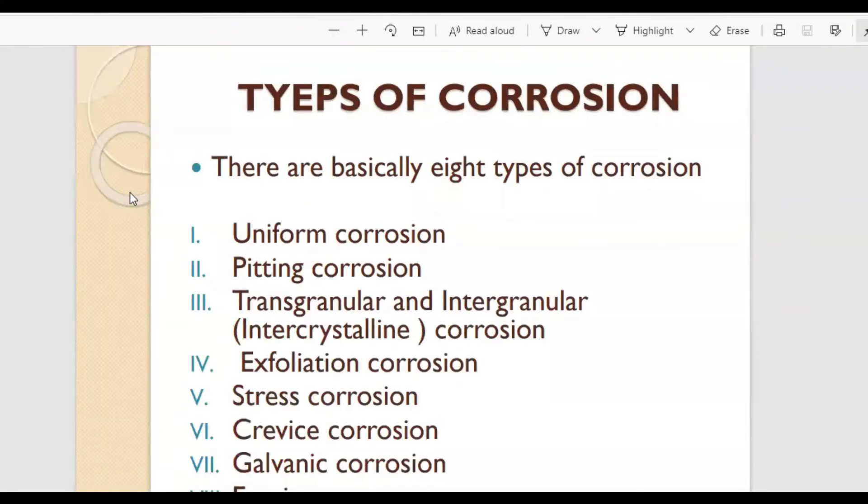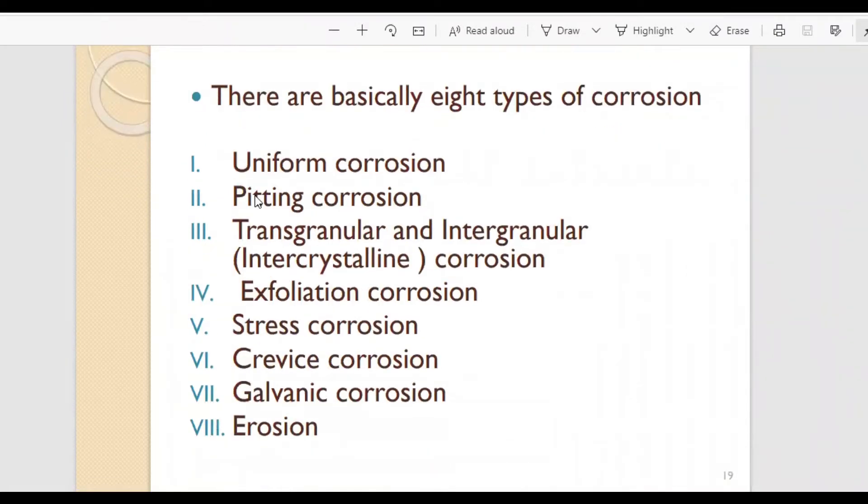We have different types of corrosion. There are basically eight types: uniform corrosion, pitting corrosion, transgranular or intergranular corrosion, exfoliation, stress corrosion, crevice corrosion, galvanic corrosion, and erosion.